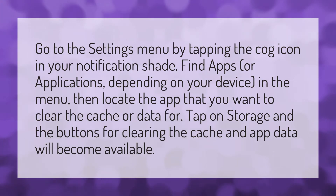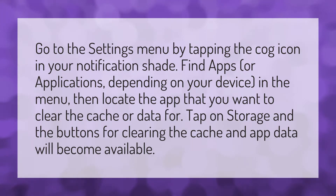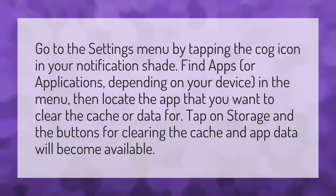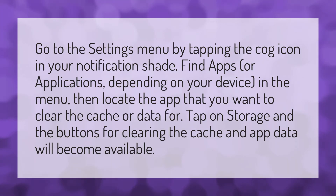Go to the settings menu by tapping the cog icon in your notification shade. Find apps or applications, depending on your device, in the menu, then locate the app that you want to clear the cache or data for. Tap on storage and the buttons for clearing the cache and app data will become available.